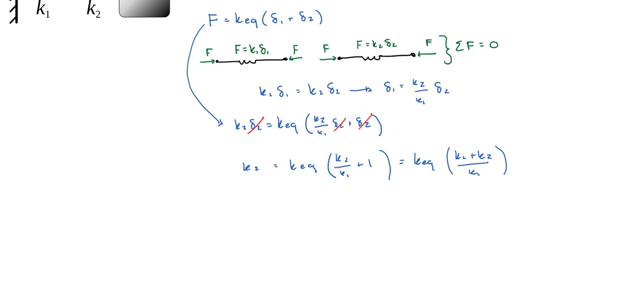And if we multiply both sides by K1 over K1 plus K2, we're going to get K1 K2 over K1 plus K2 is equal to the equivalent stiffness.